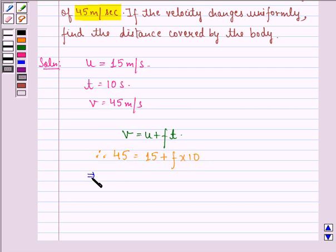This implies 30 = 10f. Therefore, f = 30/10 = 3 m/s², which is the acceleration.